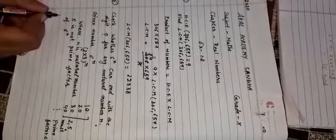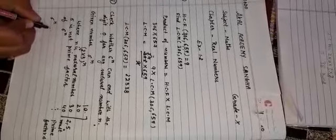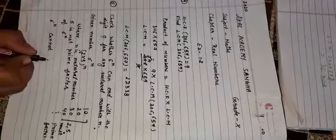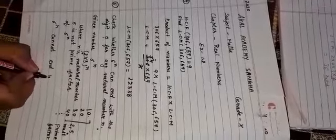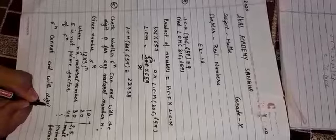Now, we will say that 6 power n cannot end with digit 0.